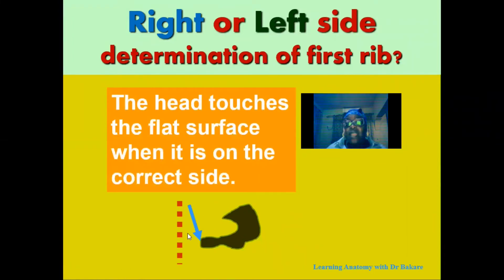If it is placed on a flat surface and the head of the rib touches the flat surface, it means that this is of the correct side. It means that this is the right first rib.